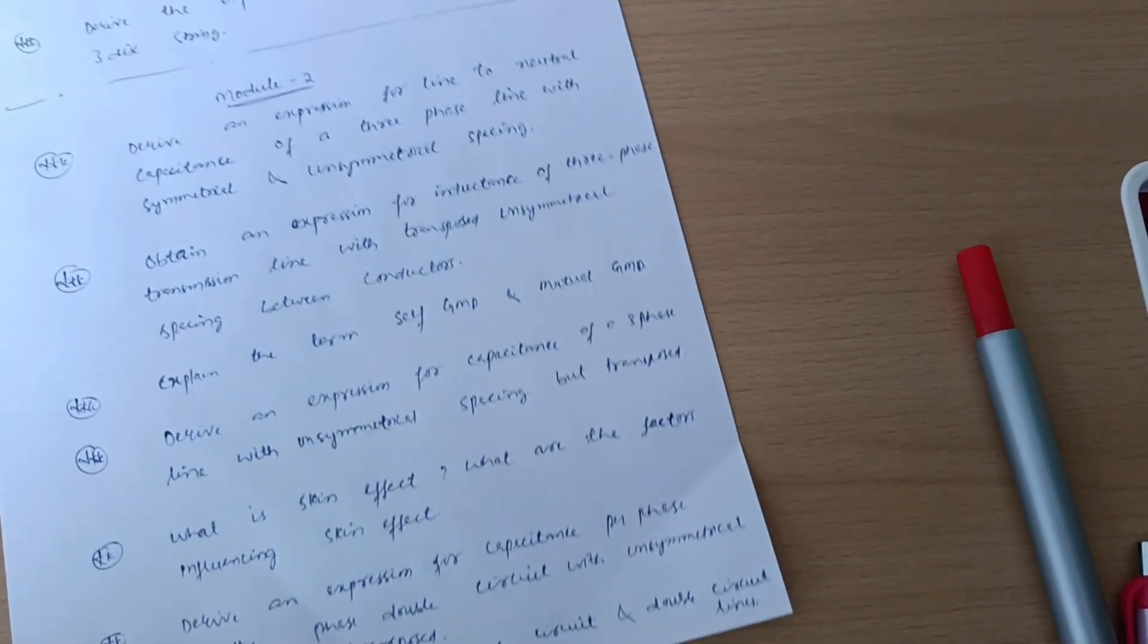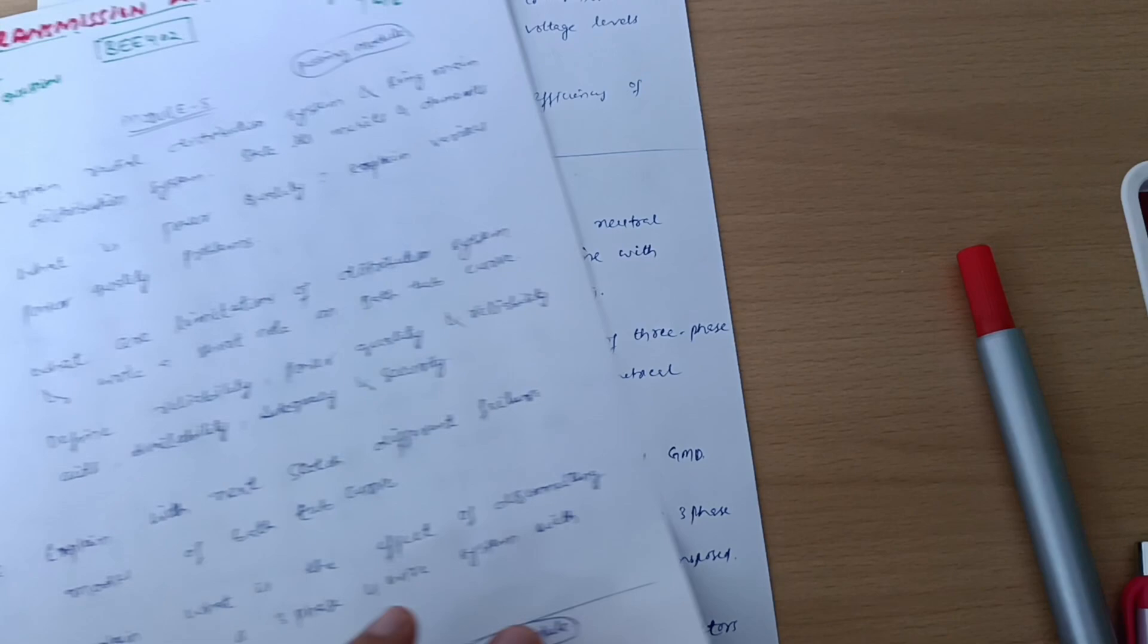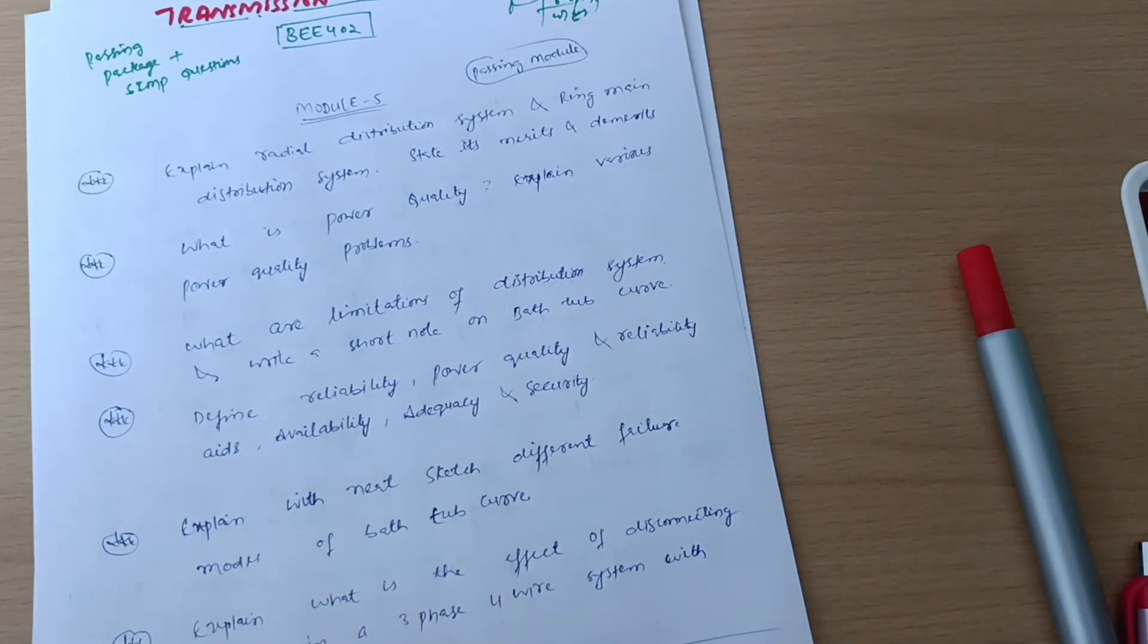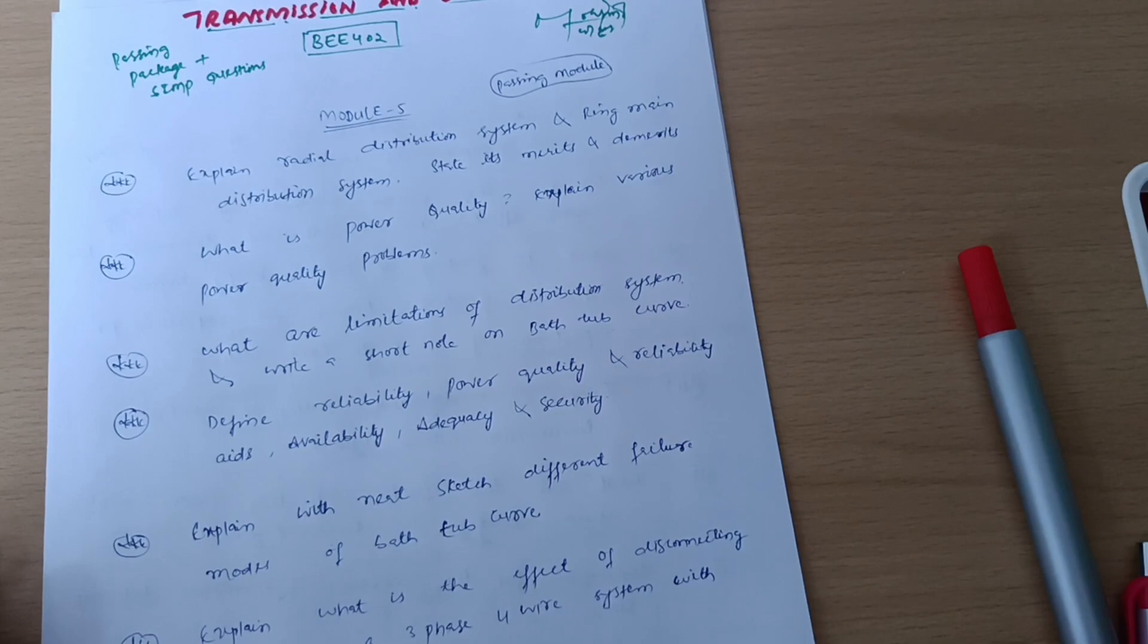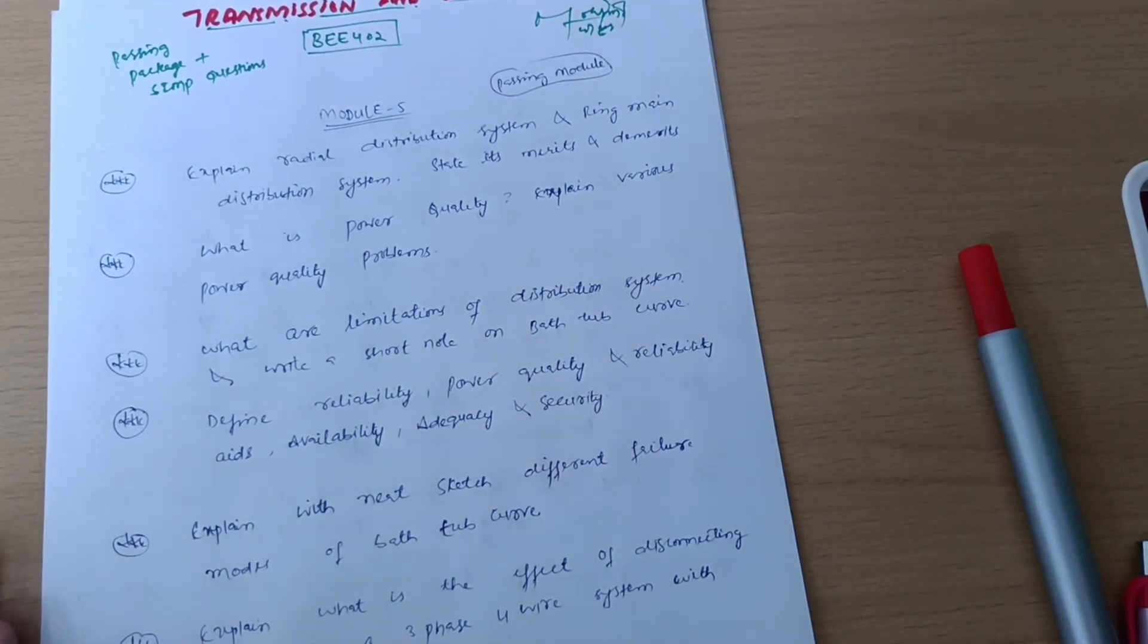This is all about the super important questions for the subject Transmission and Distribution. Don't try to neglect this particular subject. Lot of derivations are there, lot of theoretical portions are there, and numericals are also there. If you want to cover numericals in order to get good scores, you should refer to previous question papers 18EE43 and 21EE52. Also refer to the model question paper which VTU has recently released. My best wishes are with you. Make sure you will share this video to all your batchmates and friends in order to pass the subject in the first attempt itself. I wish you will clear the subject with good score. Thank you.